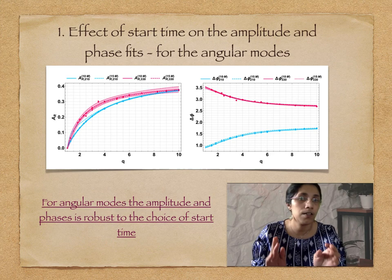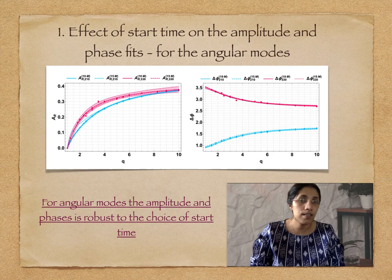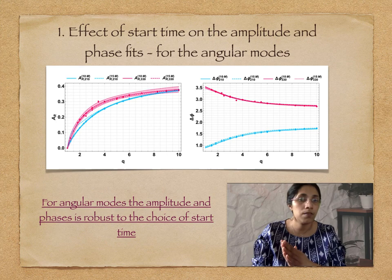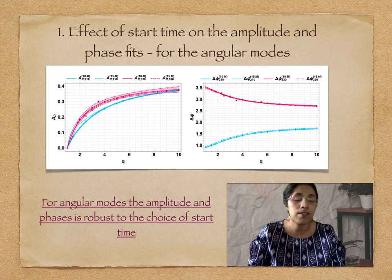There are solid lines corresponding to amplitudes fitted from 10M after the peak of the numerical waveform, and dashed lines corresponding to fitting starting at 15M after the peak. The x-axis is the mass ratio and the y-axis is the amplitude ratio and phase. Notably, there is not much difference between the dashed and solid lines, indicating that whether you fit from 10M or 15M, the amplitude ratio remains stable. Angular modes are robust to the choice of the fitting start time. The amplitude ratios quoted here are rescaled to what they would be if we extended the waveform back to the time of merger.